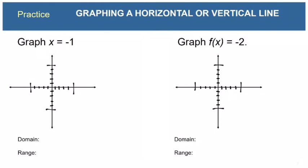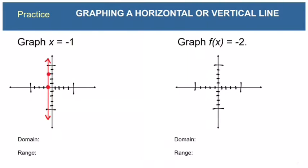Let's practice. For x equals negative 1, every point on our line has the same x value of negative 1. We can plot (negative 1, 0) and (negative 1, 3), then connect the dots with a straight line. The domain is just the single number negative 1, and the range is negative infinity to positive infinity.